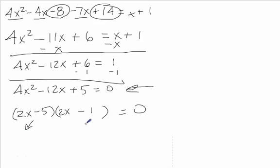And then our two little mini-problems, we get 2x minus 5 equals 0. Add 5, 2x equals 5, divide by 2. So one of the x's is 5 halves.